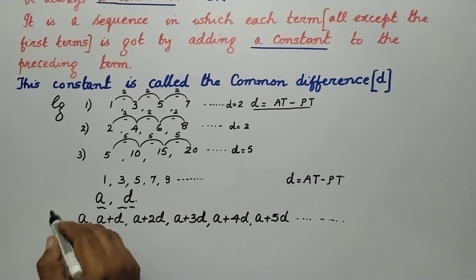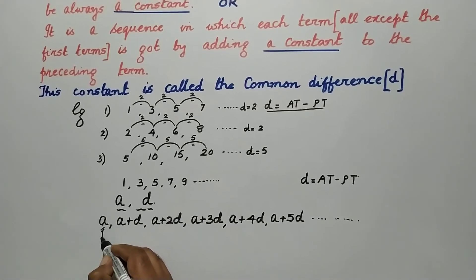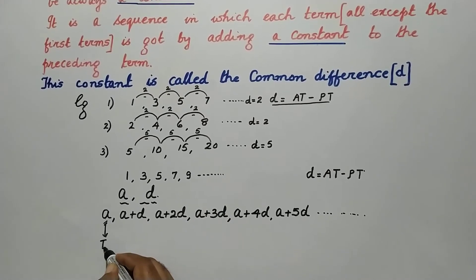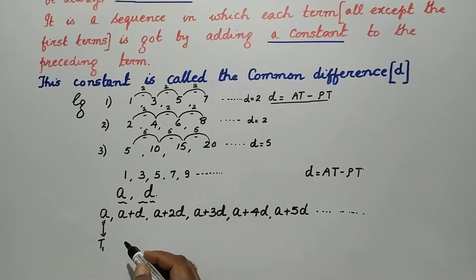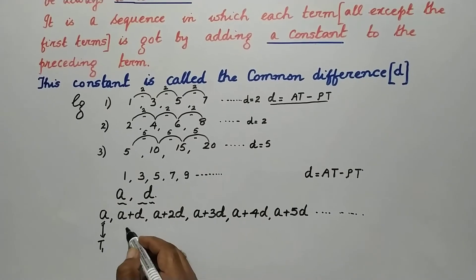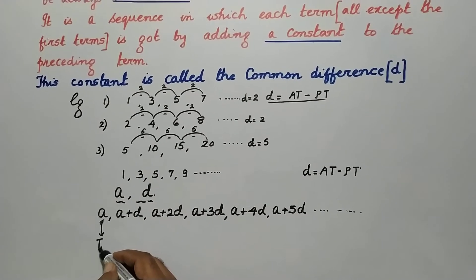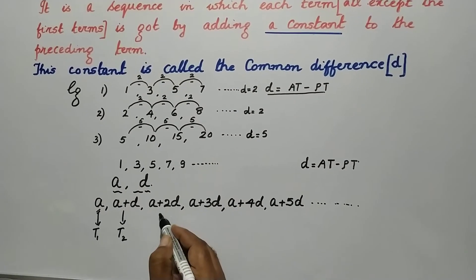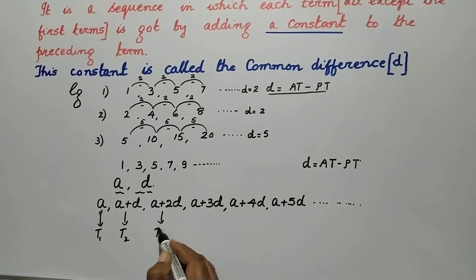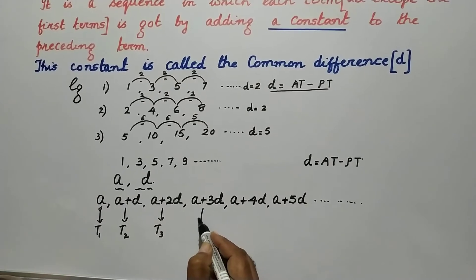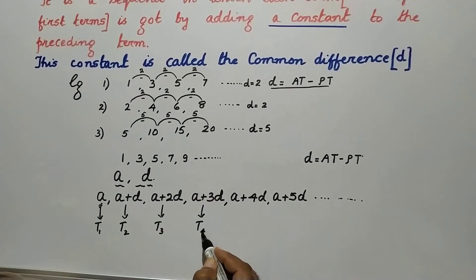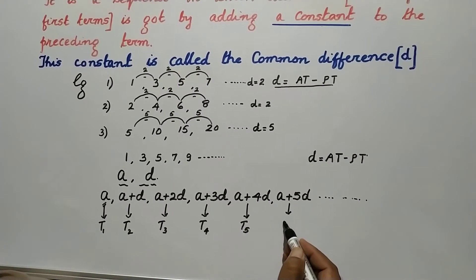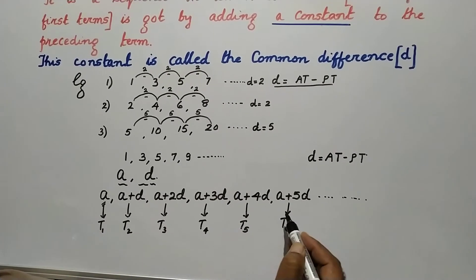In the general form, the first term A is represented as T1 — in some textbooks it is written as A1, but here we use T1. The second term is T2, the third term is T3, the fourth term is T4, the fifth term is T5, and the sixth term is T6, and this continues.